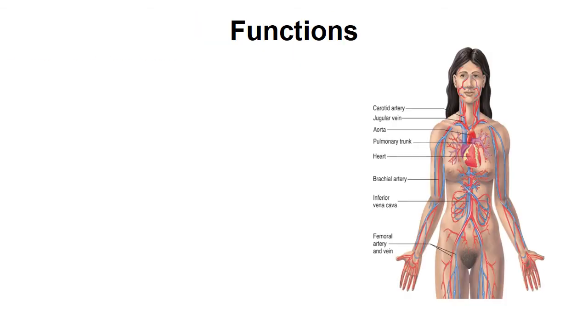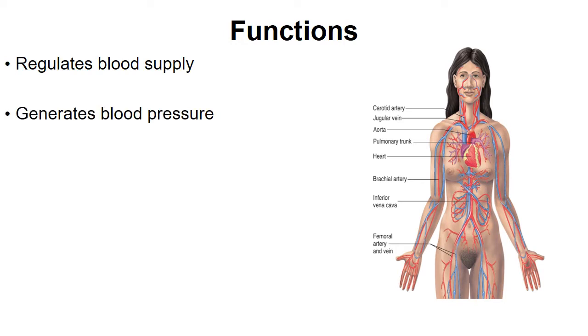Some functions of the heart include regulating blood supply, generating blood pressure, and routing blood. We call this one-way blood flow, which we will discuss when we get to valves. The heart is a very important system in your body. It is part of what's called the cardiovascular system. Another component is blood, which we've already discussed. In this unit we will discuss heart, blood, the respiratory system, and the lymphatic system.